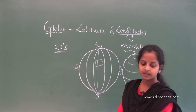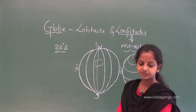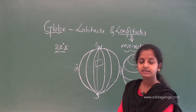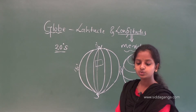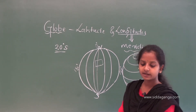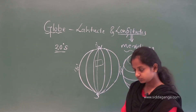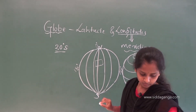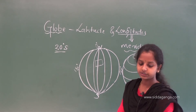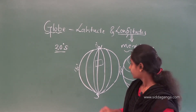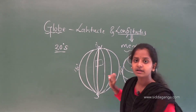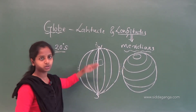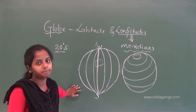The prime meridian and the 180-degree meridian divide the Earth into two halves. Counting 180 degrees to the east as well as 180 degrees to the west, we find the 180-degree meridian somewhere at the back of the globe.